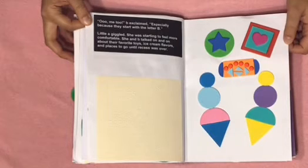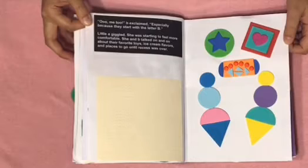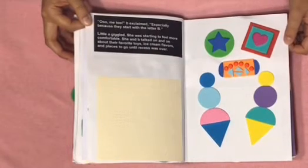She and B talked on and on about their favorite toys, ice cream flavors, and places to go until recess was over. On this page, we have the different toys and two sets of ice cream cones.